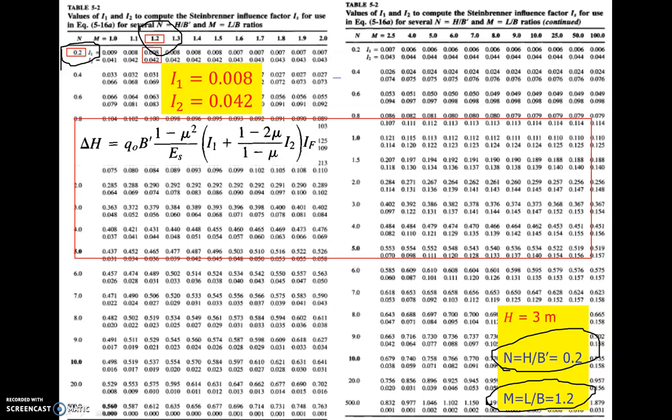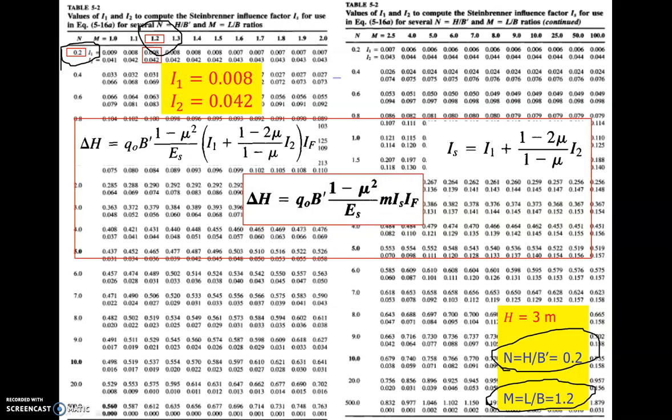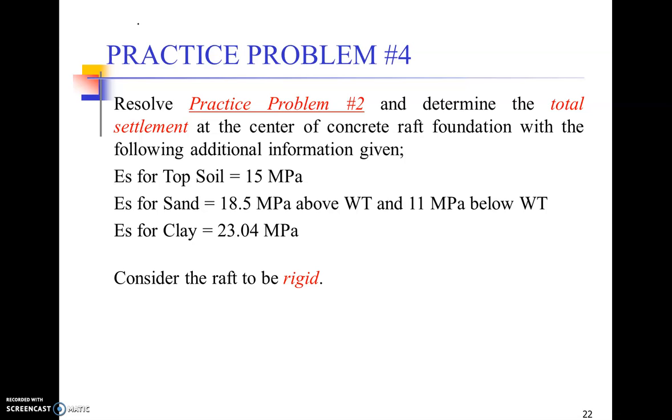Now just taking the formula which is q₀ B' times (1 minus mu squared) over Es. I1 is 0.008, I2 is 0.042, and If value was 0.975. If you put all these values in the formula and we use M equals 4, our final answer is turning out to be 4.24 millimeters. So total settlement in the sand layer, immediate settlement right after construction, would be 4.24 millimeters.